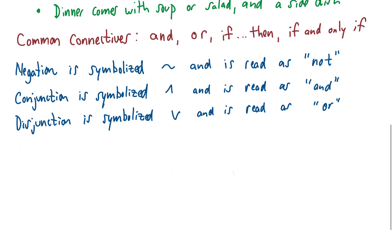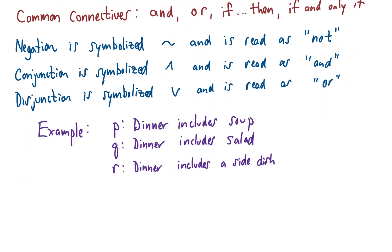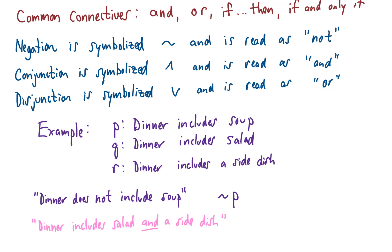Let's look at examples using these symbols. Let p represent 'dinner includes soup', q represent 'dinner includes salad', and r represent 'dinner includes a side dish'. If we want to symbolize 'dinner does not include soup', that is the negation of p, written as ~p or 'not p'. To say 'dinner includes salad and a side dish', we write q ∧ r.